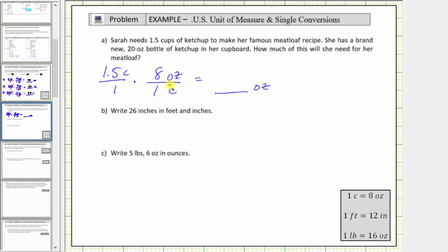Notice by multiplying by this fraction, which is equal to 1, we don't change the value, we change the units. The units of cups simplifies out, or simplifies to 1. We're left with 1.5 times 8 ounces, which equals 12 ounces. So now we know Sarah needs 12 ounces of ketchup.